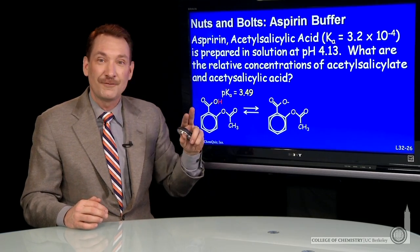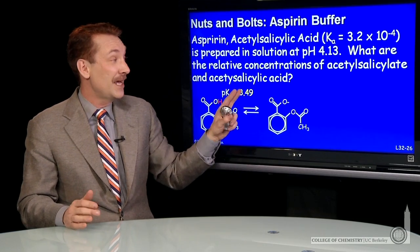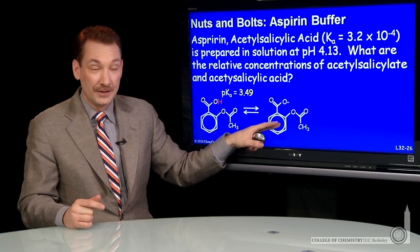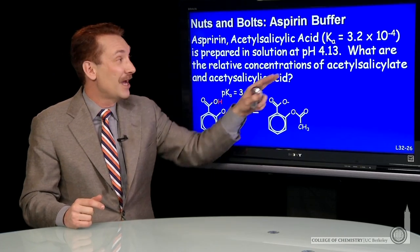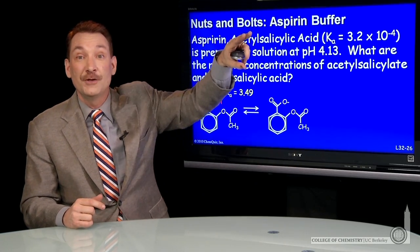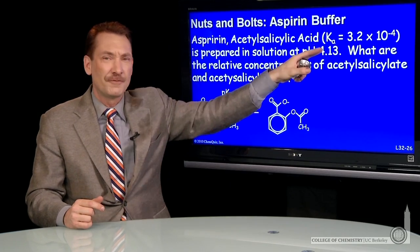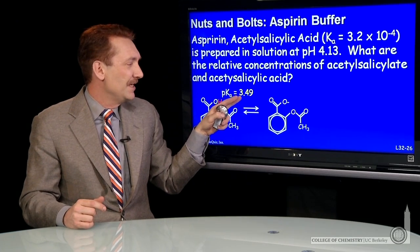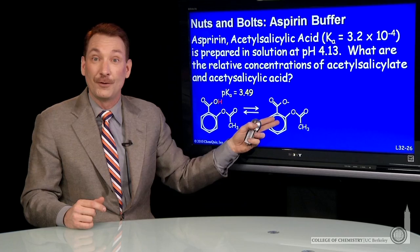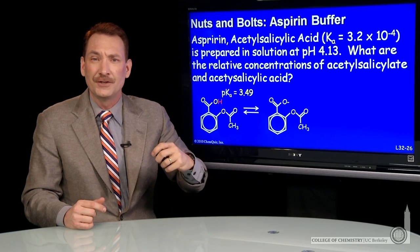We're about equal concentrations, but I'm a little bit to the basic side of the pKa, so the basic form will slightly predominate — not by a factor of 10. Remember, to get a full 10 times as much base as acid, you'd have to go to a pH one full unit above the pKa. We'd have to go up to pH 4.49 to get a 10-fold difference, and we're not there. So we expect something less than a 10-fold difference.